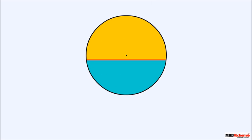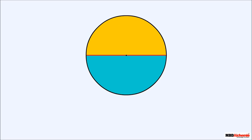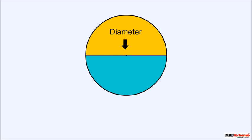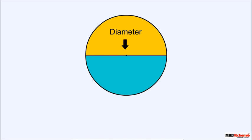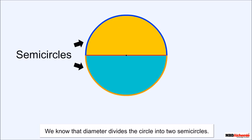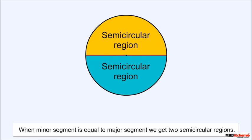Moving toward the center, the length of the chord increases, and after crossing the center it starts decreasing. Thus the chord is largest when it passes through the center. The line segment that passes through the center and joins two points on the circle is the diameter. Therefore, a diameter is the largest chord of a circle. Since the diameter divides the circle into two equal parts, when the minor segment equals the major segment, we get two semicircular regions.